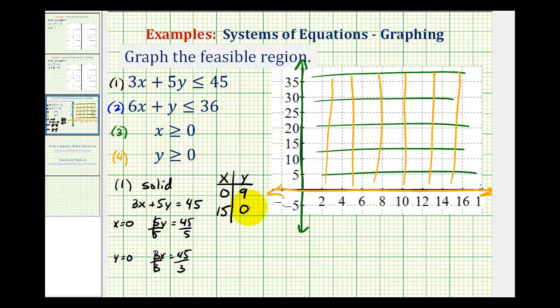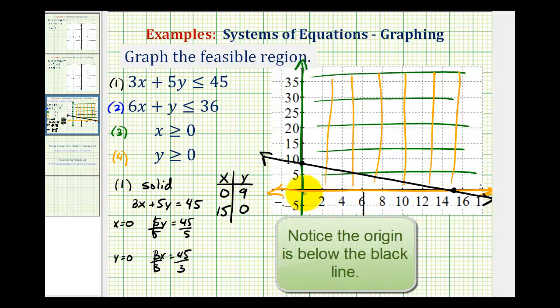So let's go ahead and sketch this border line. The y-intercept is zero, nine, so just below 10 here. And the x-intercept is 15, this point here. And then to determine whether we should shade above or below this line, let's go ahead and pick a test point. The origin is always a good point to test because the coordinates would be zero, zero. Notice if x is zero and y is zero, we have zero is less than or equal to 45, which is true. So we're going to shade below the black line.